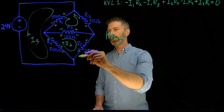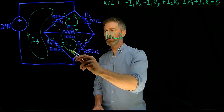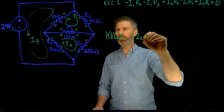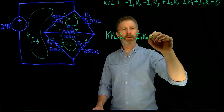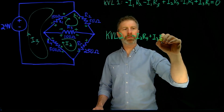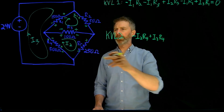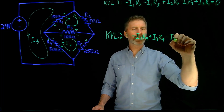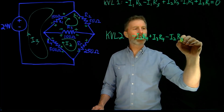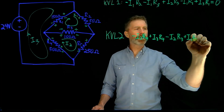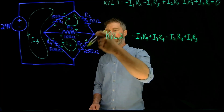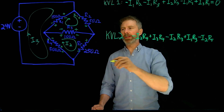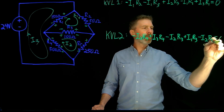For loop number two, starting at this point and going around: for R4 we get negative I2·R4, plus I3·R4. Then through R3 we get minus I2·R3, plus I1·R3. And we only have one current going through R5, which is negative I2·R5. And we're back to the beginning of the loop, so that sums to zero.